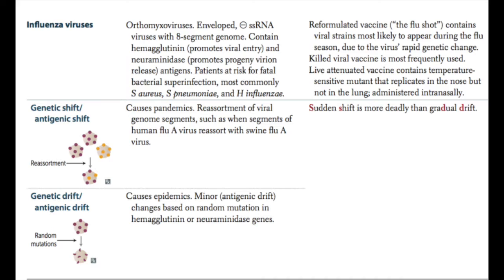Influenza viruses are orthomyxoviruses. They're enveloped, single-stranded RNA viruses with a segmented genome. They contain hemagglutinin, which promotes viral entry, and neuraminidase, which promotes progeny virion release. Influenza is responsible for worldwide epidemics — flu is not caused by H. flu bacteria, it's caused by the influenza virus. Patients infected with influenza virus are at risk for fatal bacterial superinfections. The influenza virus undergoes rapid genetic changes, which is why you need a flu vaccine every year.